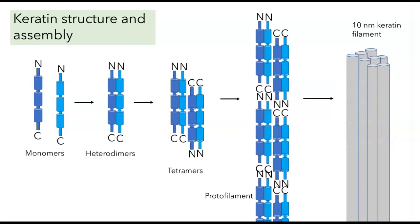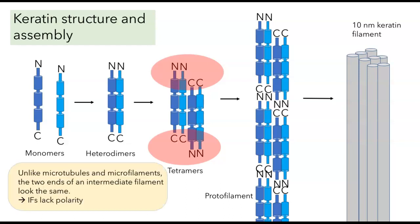This also illustrates another difference between intermediate filaments and microtubules and microfilaments: once we get to the form of the tetramer, if you look at the two ends they look the same. Because the two dimers are added in opposite directions, you would not be able to tell the difference between the top end and the bottom end. This means that when those building blocks are incorporated into a larger keratin filament, the two ends look the same.